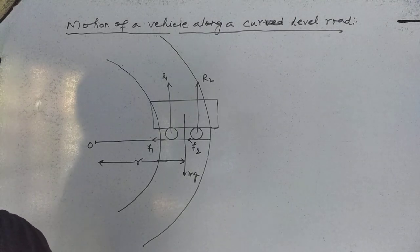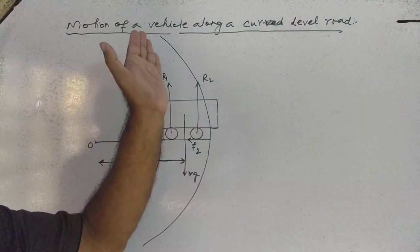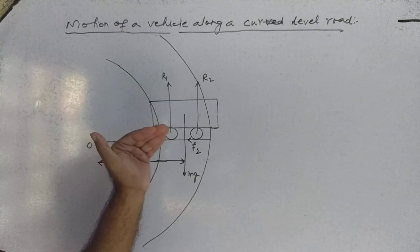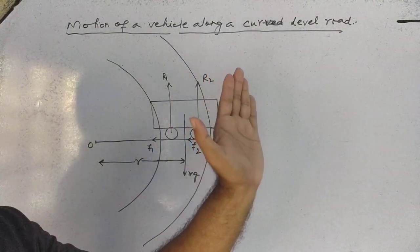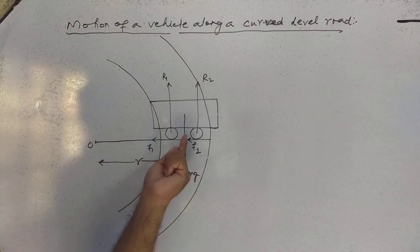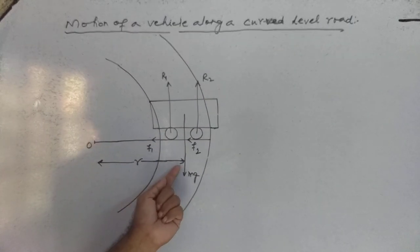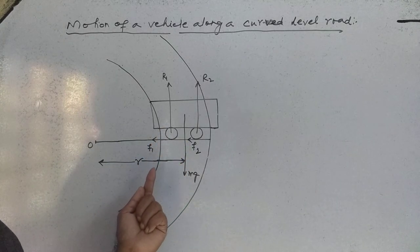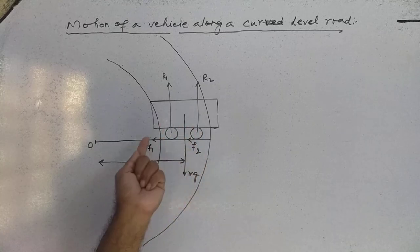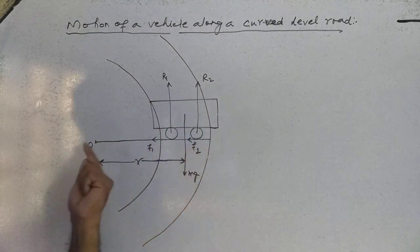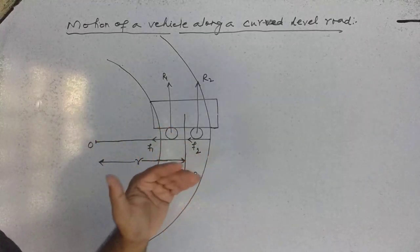Whenever a vehicle goes along the turning of a level road, it has a tendency to move outward. That's why the frictional force will definitely be in the inward direction, towards the center of the path. F1 is the friction for one pair of wheels and F2 for the other pair. The total frictional force acts towards the center because the vehicle tends to go outward.